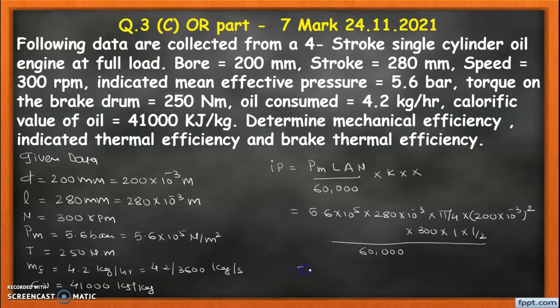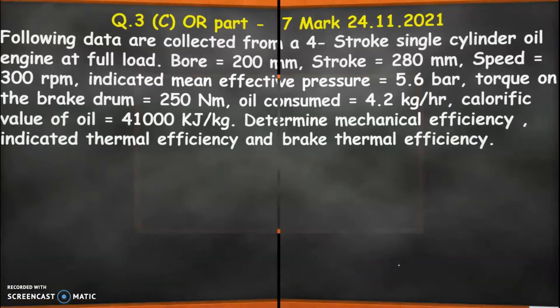By calculation we get the indicated power is 12.308 kilowatt. Now we are going to calculate the brake power. So brake power is calculated using formula 2πNT/60,000, which also comes in the same unit of kilowatt. So 2π is constant, N is 300 rpm, and torque is 250, divided by 60,000. So we get the brake power, that is 7.85 kilowatt.